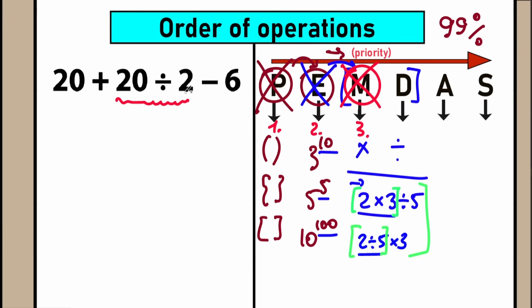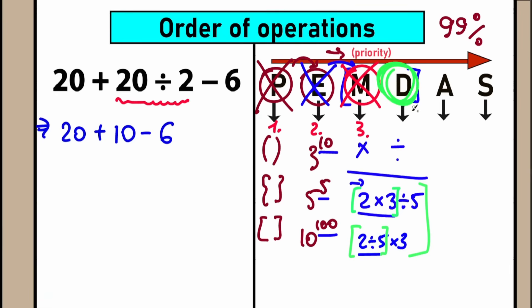So our first step is division. We have 20 plus 20 divided by 2: the division gives us 10. We now have 20 plus 10, and we still have minus 6. We complete this division step. We don't have parentheses, we skip that; we don't have exponents, we skip that; we don't have multiplication, we skip that. Our first step is this division.